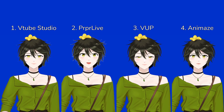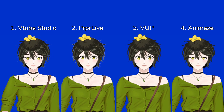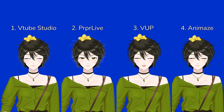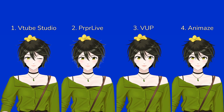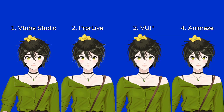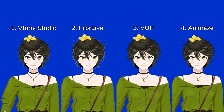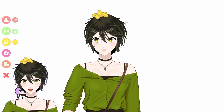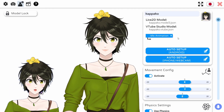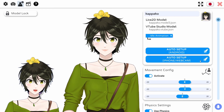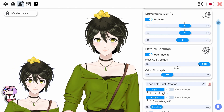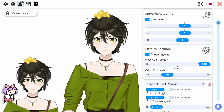In my opinion, VTube Studio and PRPR Live have the smoothest face tracking, but VTube Studio is my favorite because it has the settings that give you full control over how your face controls your VTuber model. You can go into settings and add extra XYZ movement, wind blowing effect, and settings for which input controls which parameter.